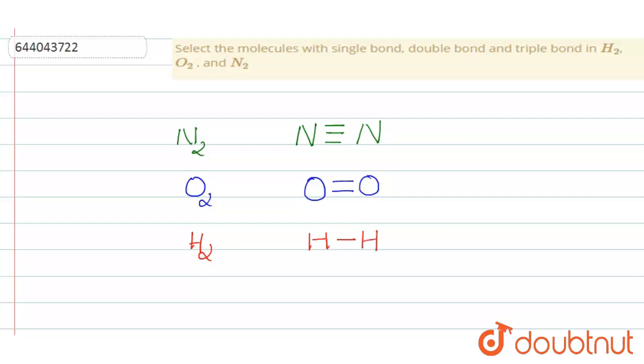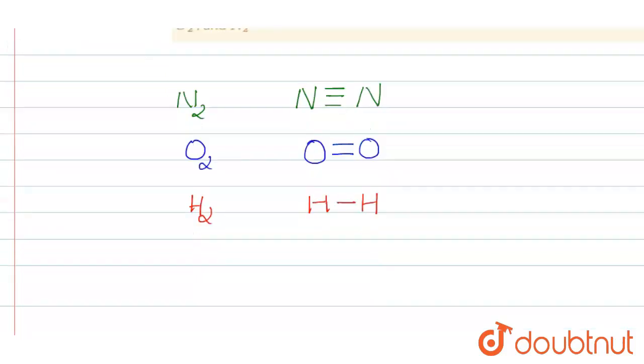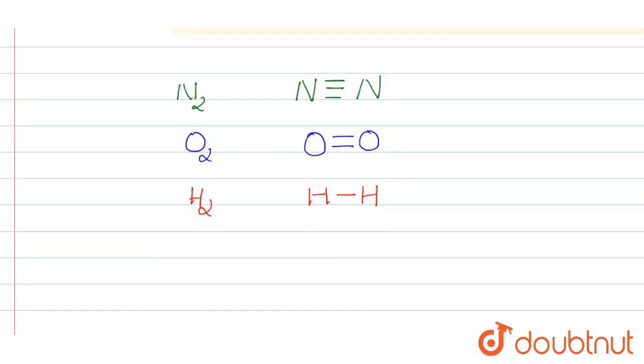So let us see how it takes place. N2, so in N2 means nitrogen. Nitrogen atomic number is 7 having the electrons 2, 5. So nitrogen has 5 electrons: 1, 2, 3, 4, 5.